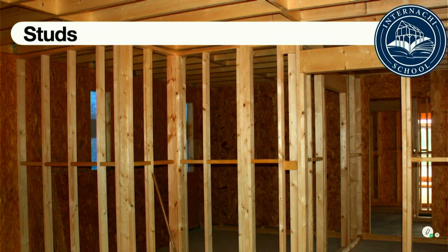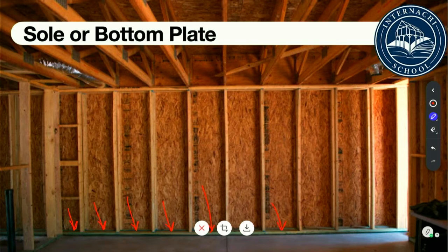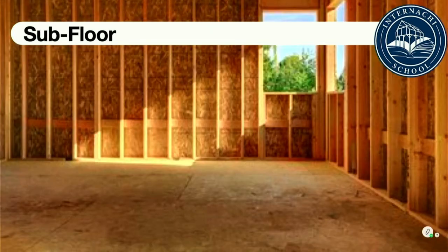A single top plate may be used if permitted by the local code inspector. In platform framing, the sole plate is the first course of horizontally placed lumber on top of the subflooring material, comprising the bottom of exterior walls and interior partitions where vertically positioned studs are attached. A subfloor is comprised of materials — usually plywood, OSB, or planking — attached to joists, making up the top structural portion of the platform assembly on which occupants walk.